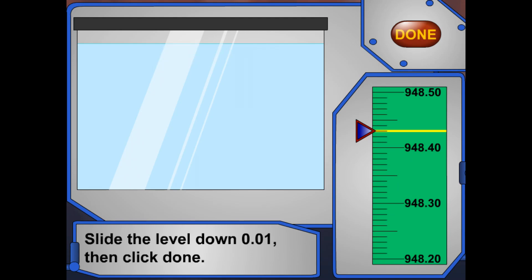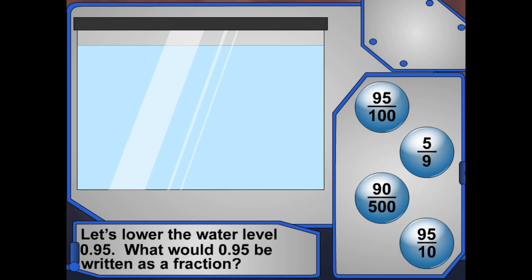If you lower the water level by 0.01 gallons, what level would the tank be? Slide the level, then click Done. Right! 0.01 gallons is one-hundredth! Not much of a change! Okay, let's lower the water level by 0.95 gallons. What fraction have we just moved the water level? Right! 0.95 is the same as 95 hundredths, or you could reduce the fraction to 19 twentieths.